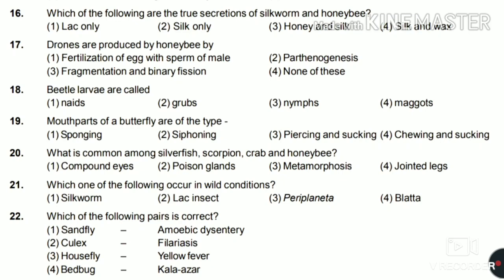Twentieth: which is common among silverfish, scorpion, crab, and honey bee — compound eyes, poison glands, metamorphosis, or jointed legs? The answer is jointed legs. Compound eyes are present in silverfish and honey bee, poison glands are present in scorpion, but jointed appendages are the only option present in all of them. That is why the answer is jointed legs.